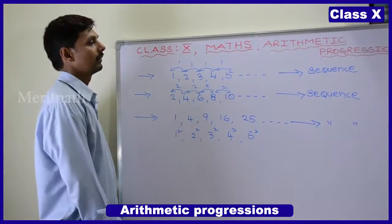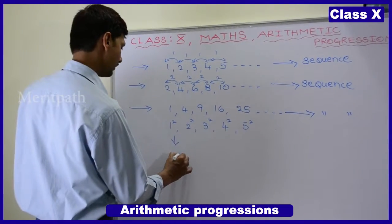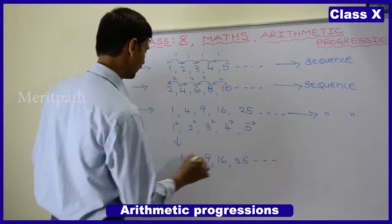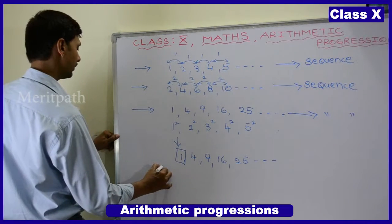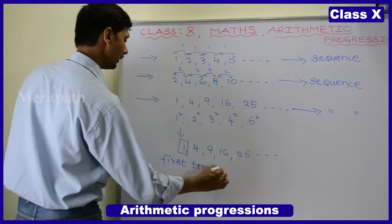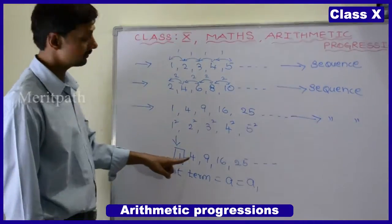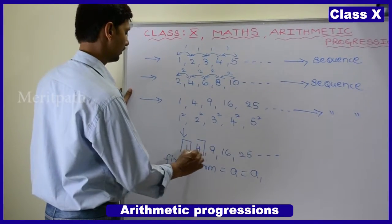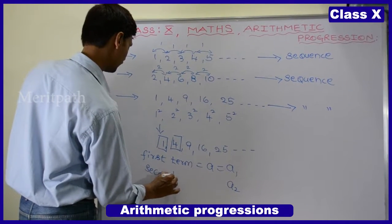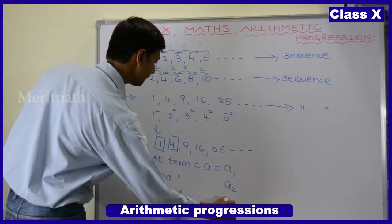So in this sequence, if we take the values 1, 4, 9, 25, and so on — the first term is called a, also written as a1. The second term is called a2. The third term is called a3, and so on.